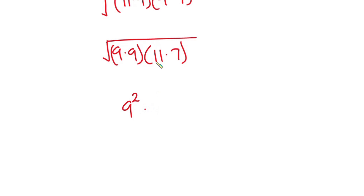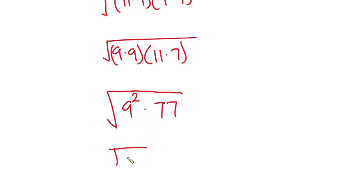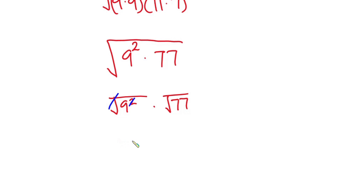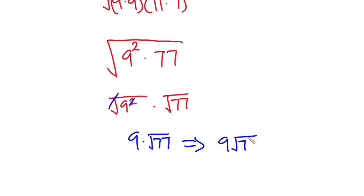9 times 9 is the same as 9 to the second power, and 11 times 7 is 77. So this can be written as the square root of 9 squared times the square root of 77. The square root and the square cancel, giving us 9 times the square root of 77, which is also written as 9 root 77. And we are done.